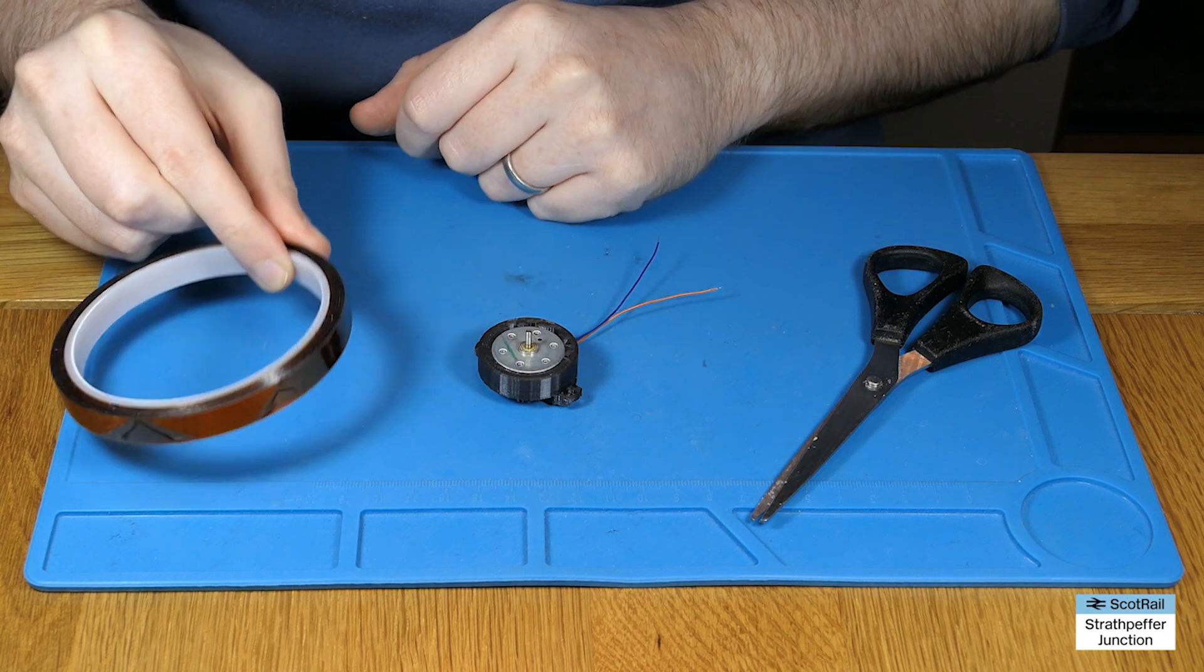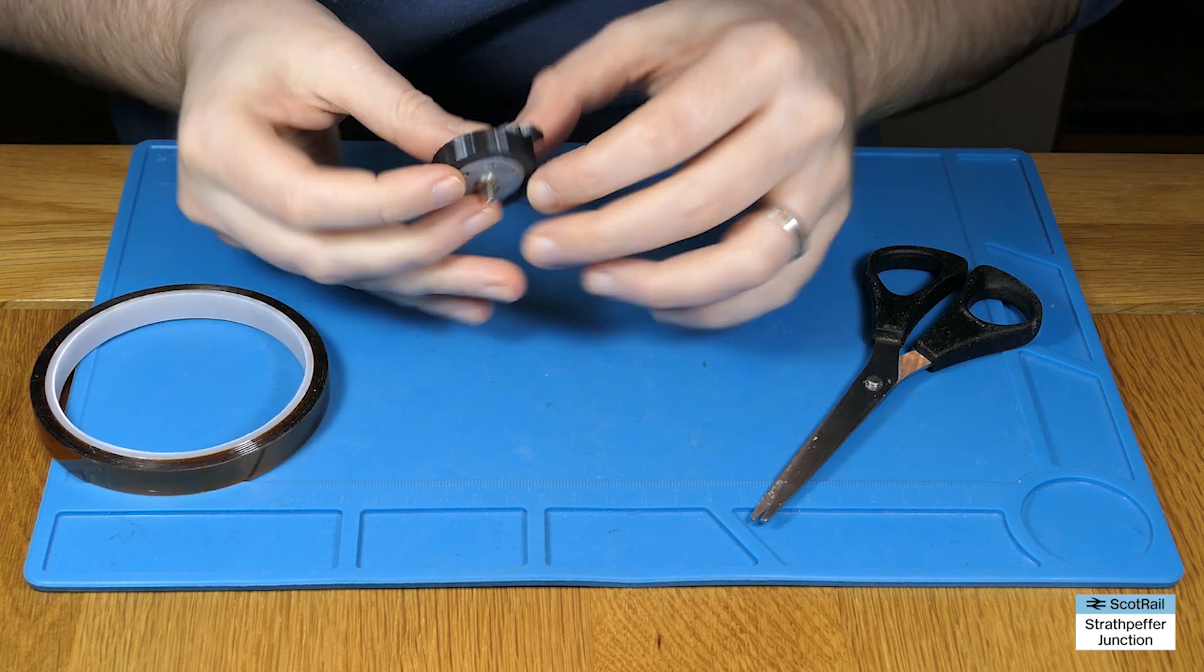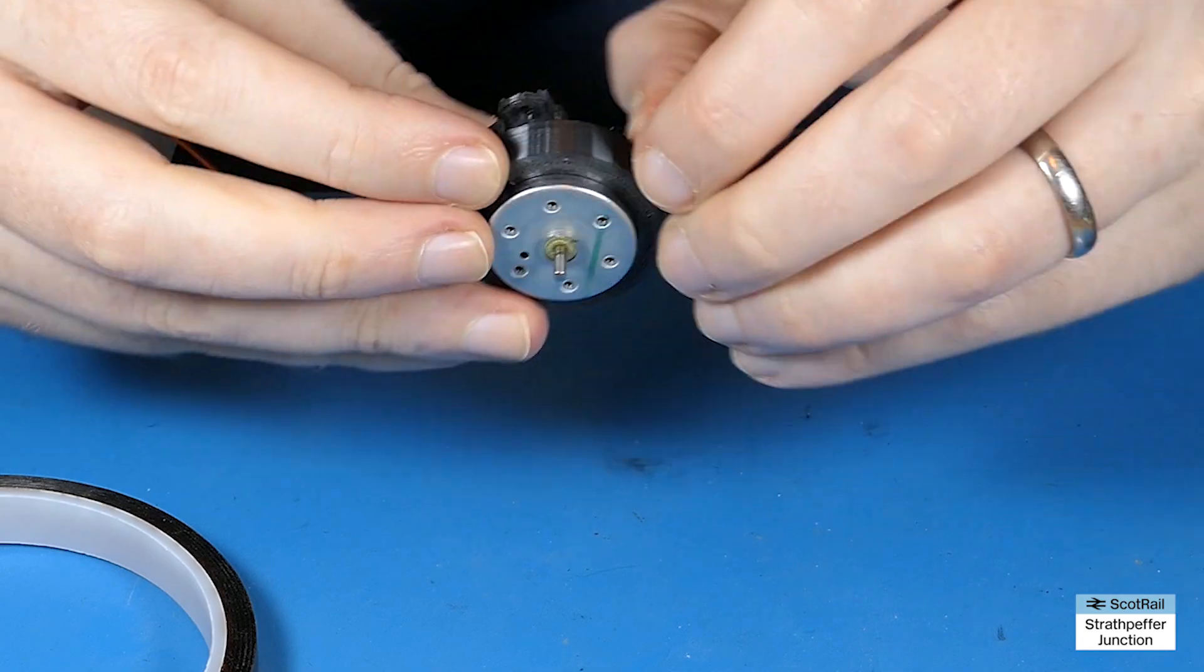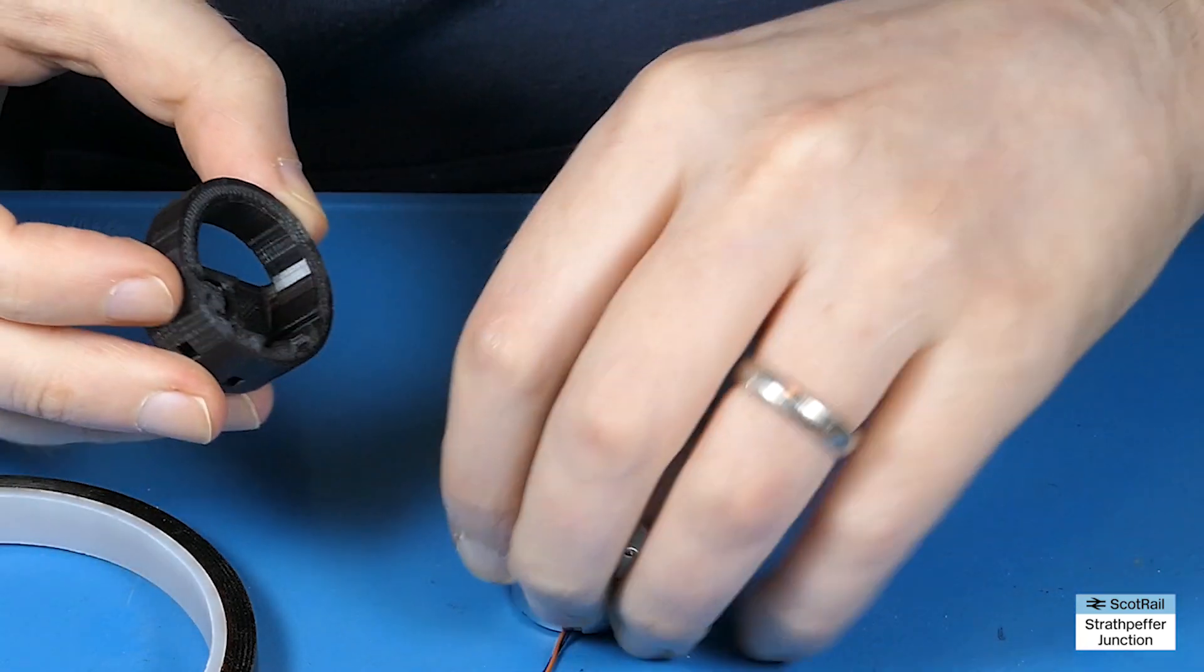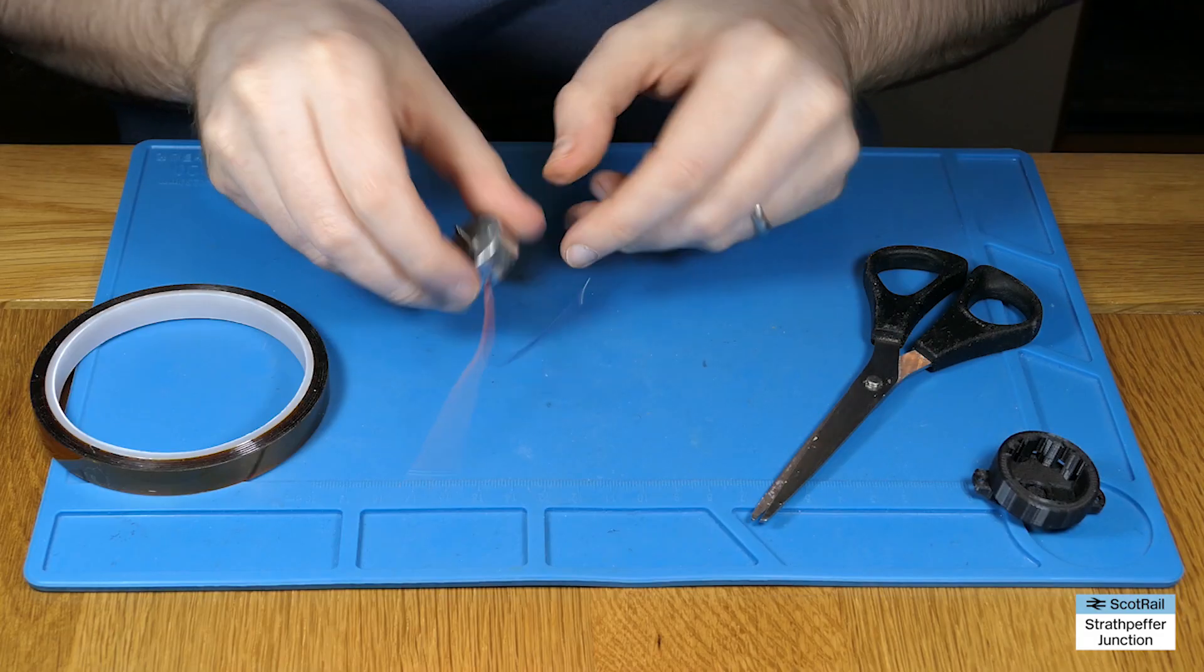But if you've got thicker Kapton tape, you can use that, just trim it down to size. So what we'll do anyway is we'll pop the motor out this time rather than just half out, we'll take the whole thing out, we'll move the adapter to the side.